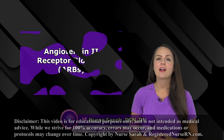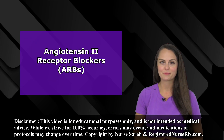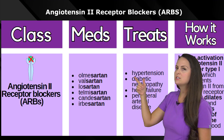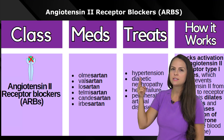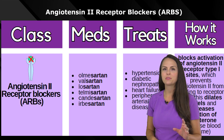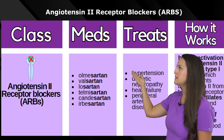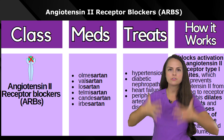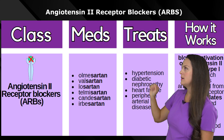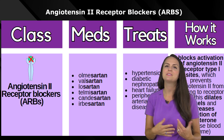Let's quickly do a pharm review over angiotensin 2 receptor blockers, also known as ARBs. Whenever you see the name of this medication class, pay attention to that angiotensin 2. We know from our previous lectures, like with the RAS system, angiotensin 2 is a substance that when activated causes vasoconstriction throughout your body. If we're blocking its receptors, we're going to get the opposite of that — vasodilation.